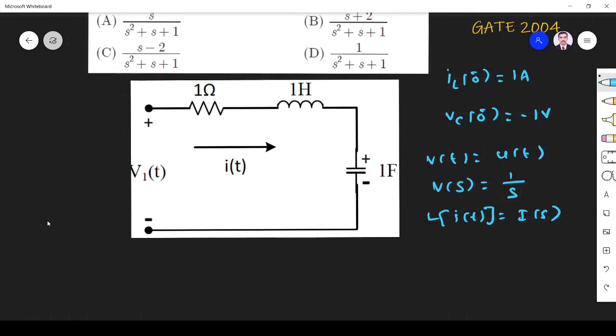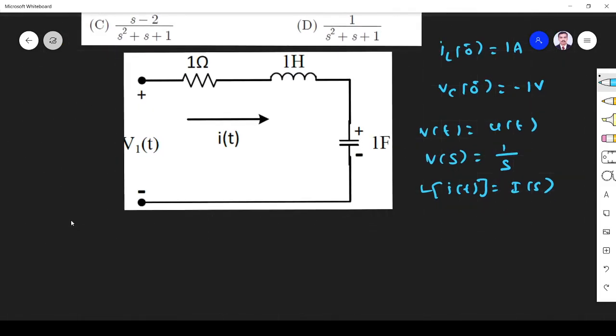So I want I(s). I write in the form of I(s). So I apply KVL to the circuit. V(t) = I(t)R + L(dI/dt) + (1/C)∫i dt.